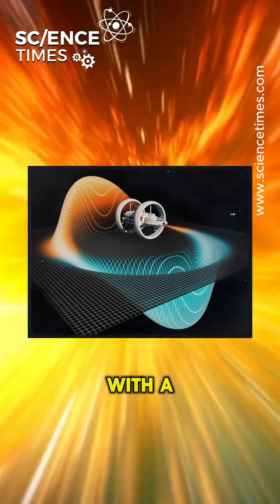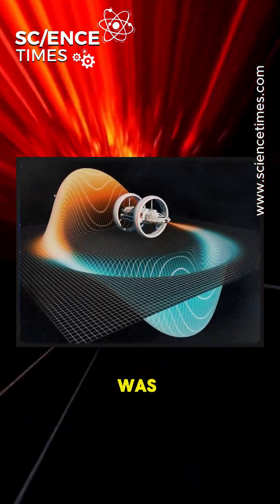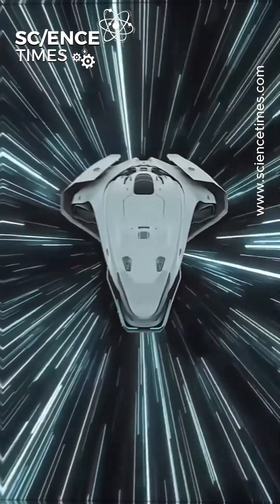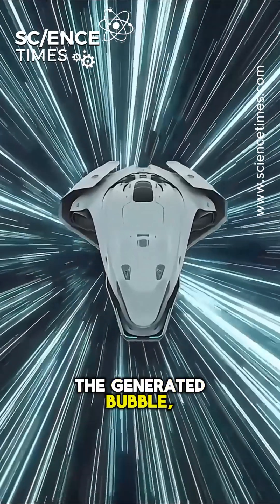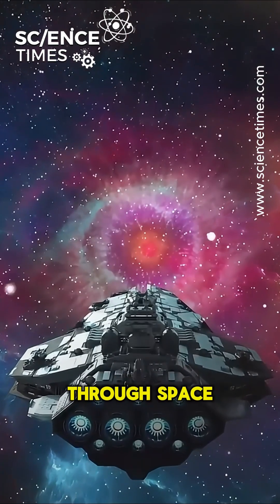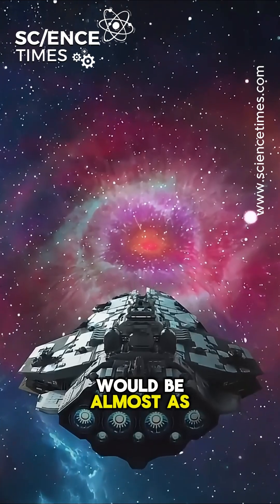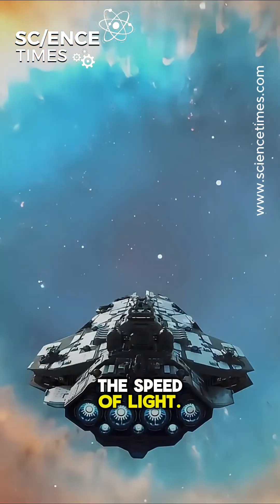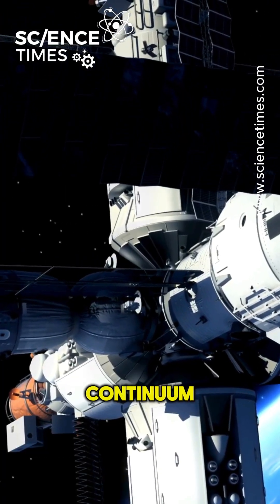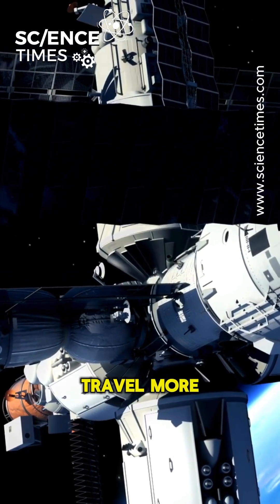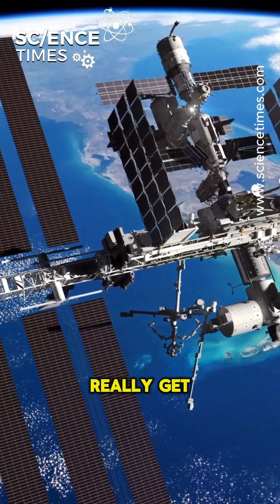A stable matter shell with a shift vector distribution was incorporated into the model. With the help of the generated bubble, the engine could travel through space with a speed that would be almost as fast as the speed of light. Distortion of local space continuum could make interstellar travel more possible. But can the spacecraft really get close?